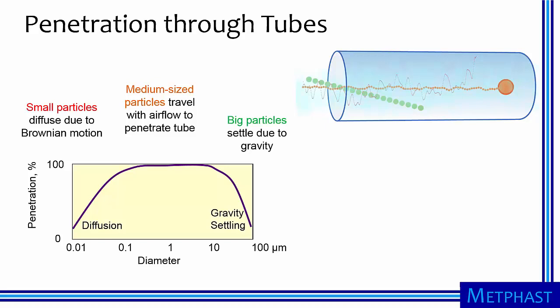Transport through something is characterized by penetration, which is 1 minus the collection efficiency. So in this plot, a penetration of 100% means that all of the particles pass through or penetrate the tube. And that of 0 means that all of the particles hit the walls of the tube and do not transport to the other side.